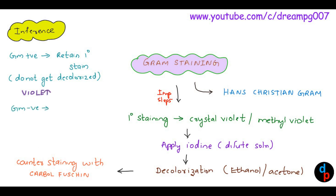Whereas in gram-negative organisms, the outermost layer gets decolorized with ethanol and acetone and takes the color of the counter stain. So it appears red in color.